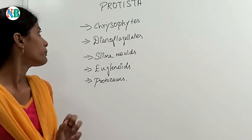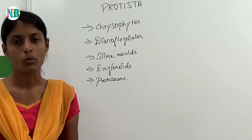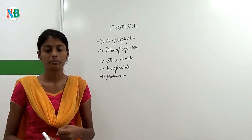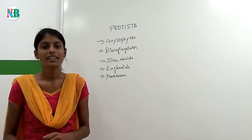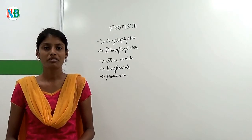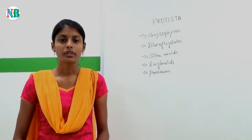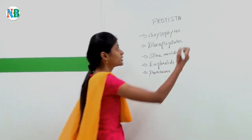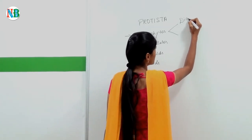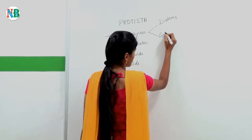Protista includes these groups and they are mostly aquatic. They are eukaryotic, hence they have a nucleus and membrane-bound organelles. They reproduce both sexually and asexually by zygote formation and cell fusion. Now we are going to see about chrysophytes. This includes two things: one is diatoms, and another one is golden algae.